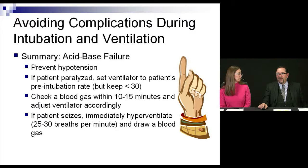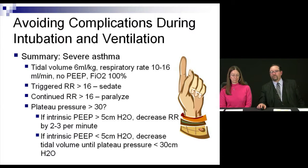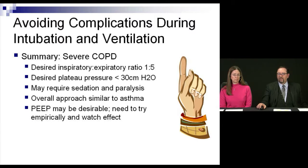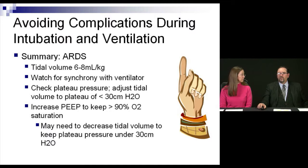If a patient seizes, get a blood gas and consider bicarbonate. For severe asthma: low tidal volumes, respiratory rate greater than 16 if triggering; sedate and paralyze if needed; watch plateau pressures under 30. If plateau pressure is greater than 30, decrease respiratory rate by 2-3 per minute. If intrinsic PEEP is greater than 5, decrease respiratory rate; if less than 5, decrease tidal volume. For severe COPD: consider an I:E ratio of 1:5, keep plateaus low, sedation and paralysis may be required; PEEP may be needed to maintain airway patency. For ARDS: lower tidal volumes, synchrony is key, increase PEEP to keep sats at 90% — no higher, to avoid barotrauma.